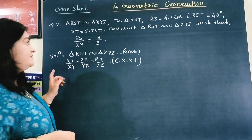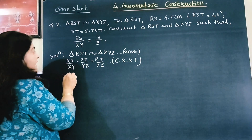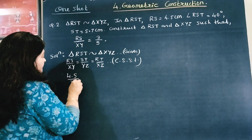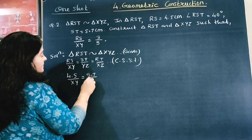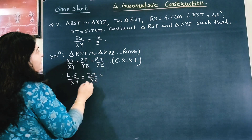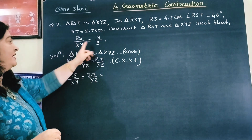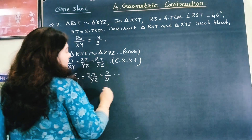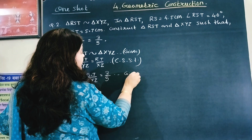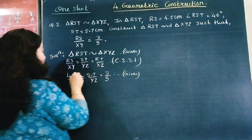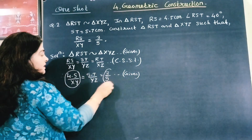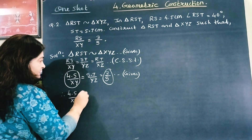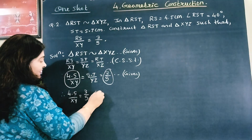We are given RS = 4.5, ST = 5.7, and the ratio RS upon XY is 3 upon 5. Let us take the first and last ratio: 4.5 upon XY equals 3 upon 5.